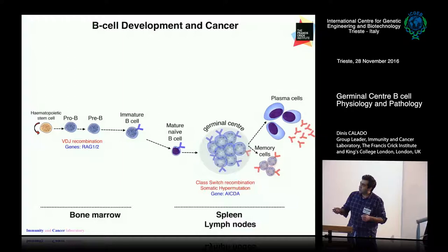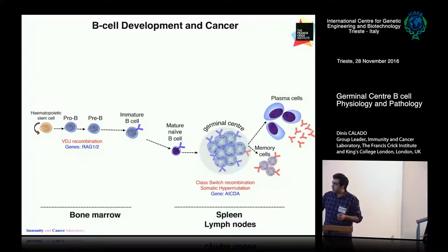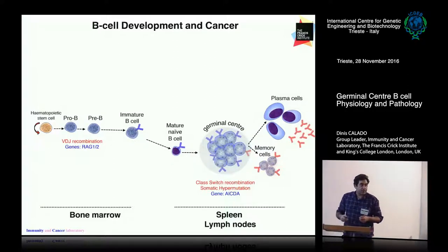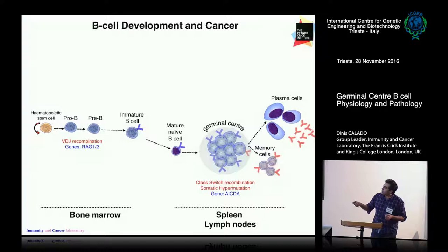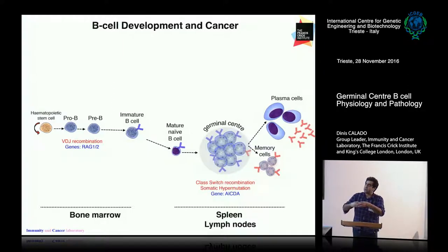I've put here a very simple scheme of B-cell development. As you know, B-cells develop from the bone marrow; they undergo processes of DNA recombination mediated by enzymes called RAG1 and RAG2, which lead to the formation of a B-cell receptor on the surface of the B-cells. These steps occur primarily in the bone marrow. When B-cells mature, they go on to secondary lymphoid organs like spleen and lymph nodes, where they can be exposed to antigens as part of an immune response and form a reaction called the germinal center B-cell reaction.